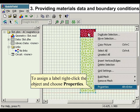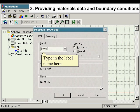To assign a label, right-click the object and choose Properties. Type in the label name here.